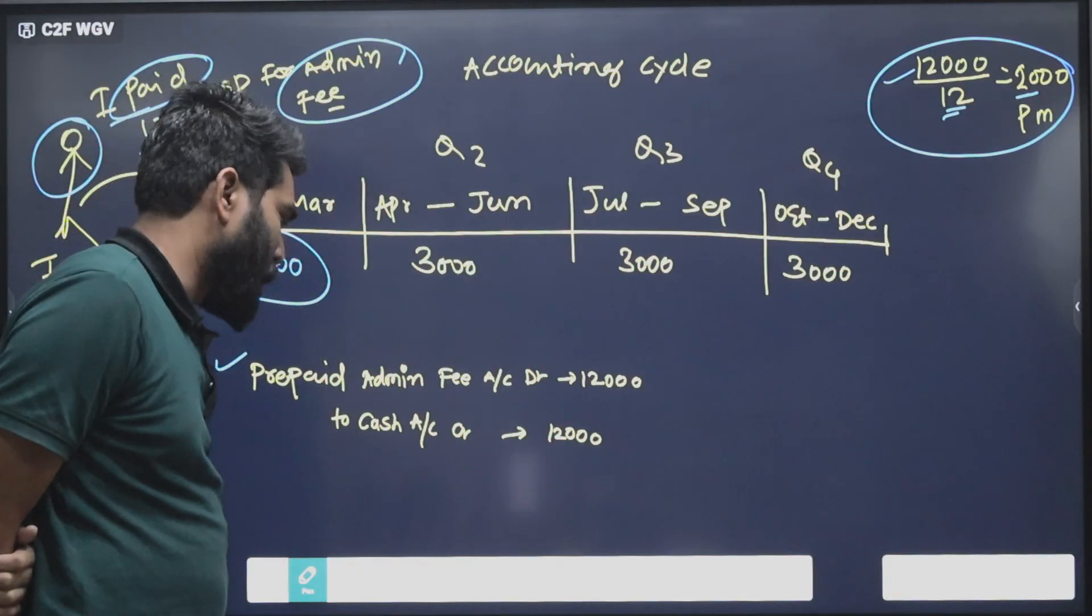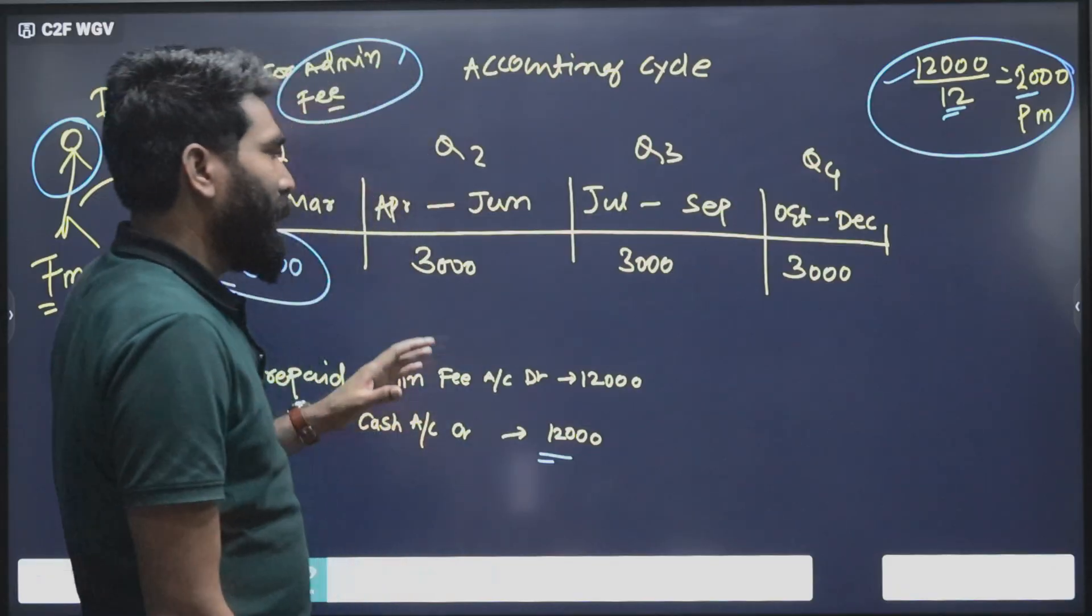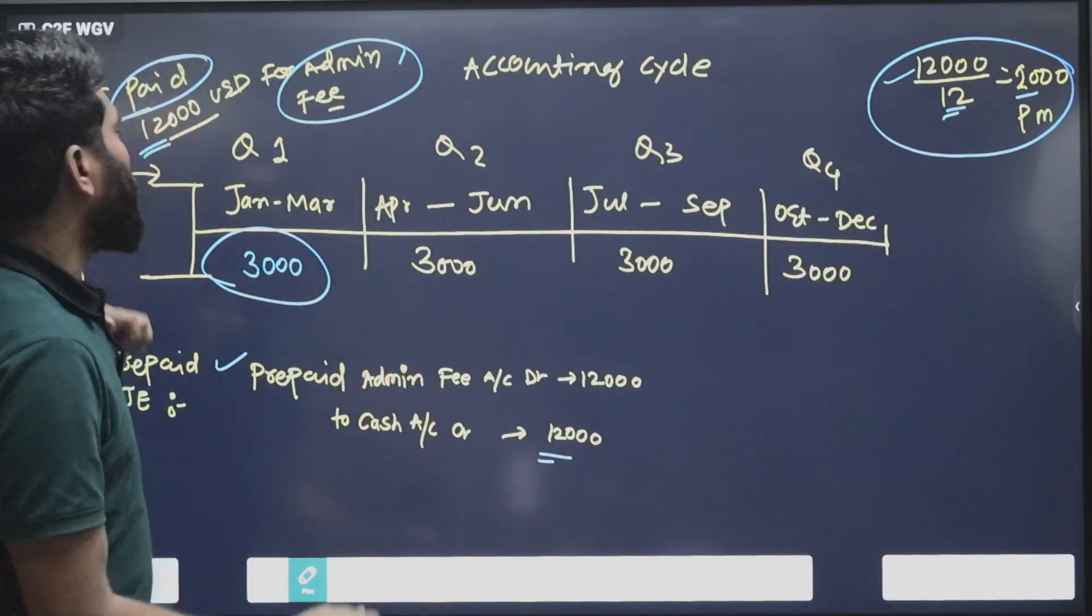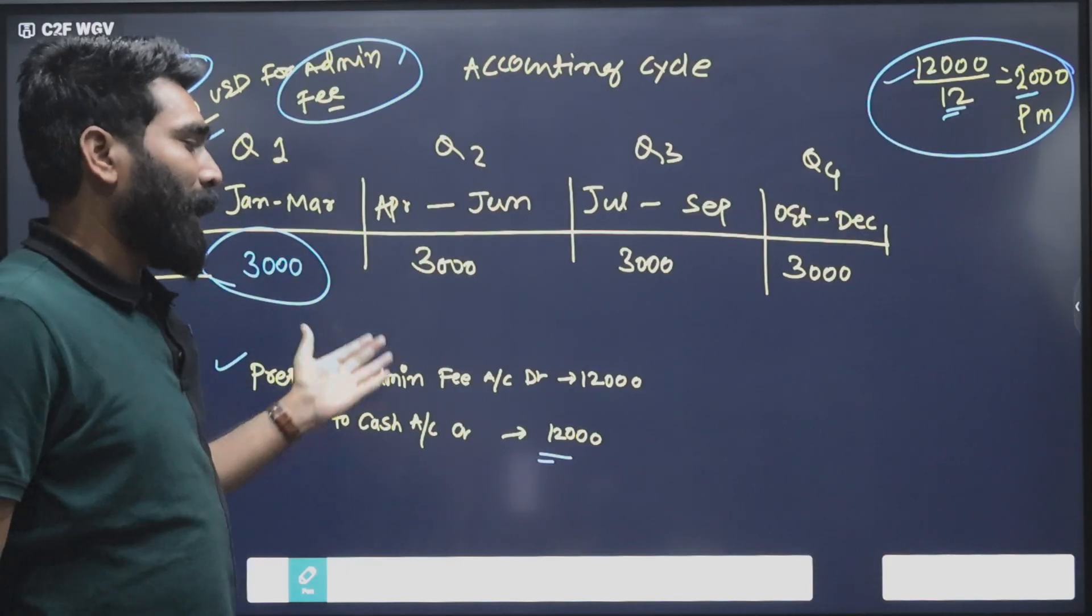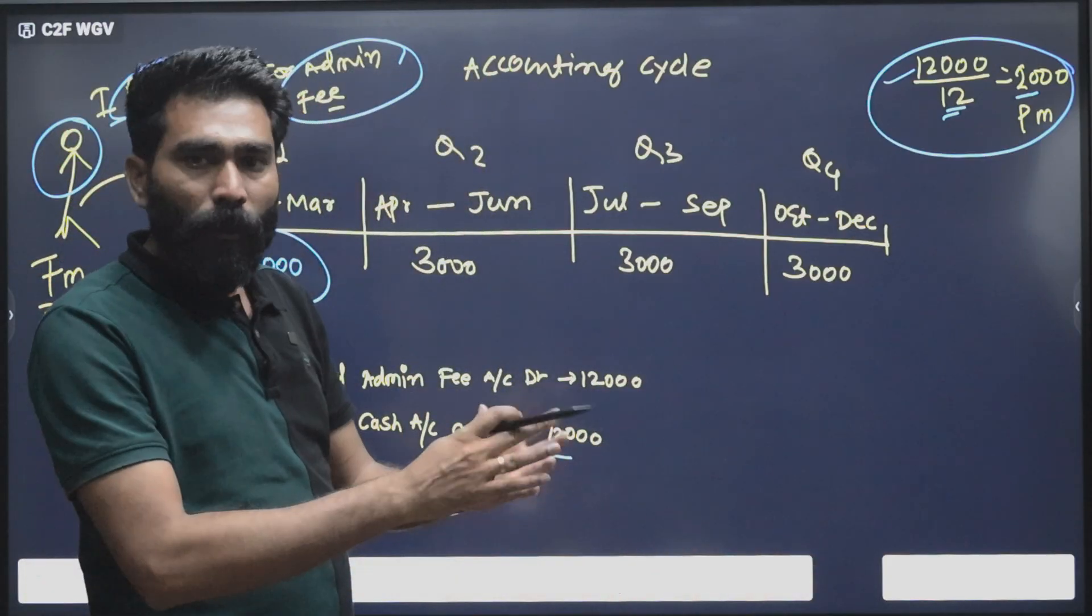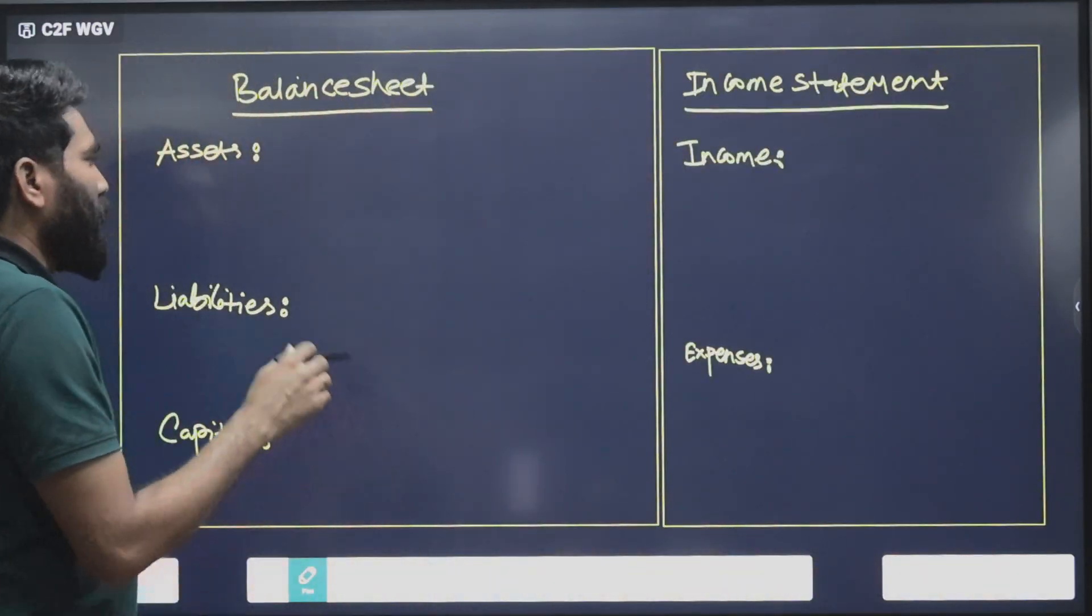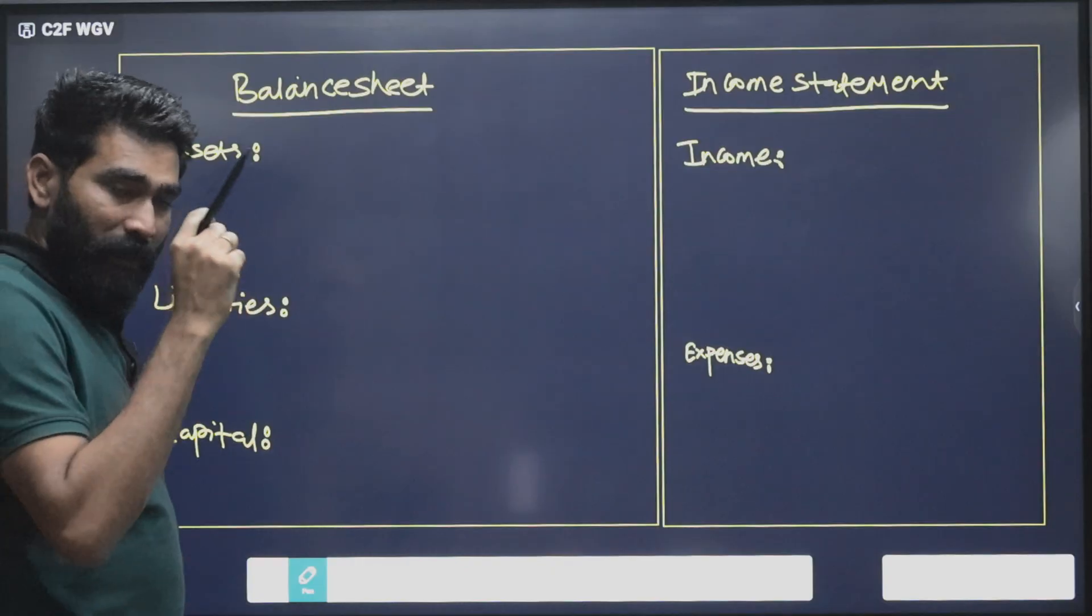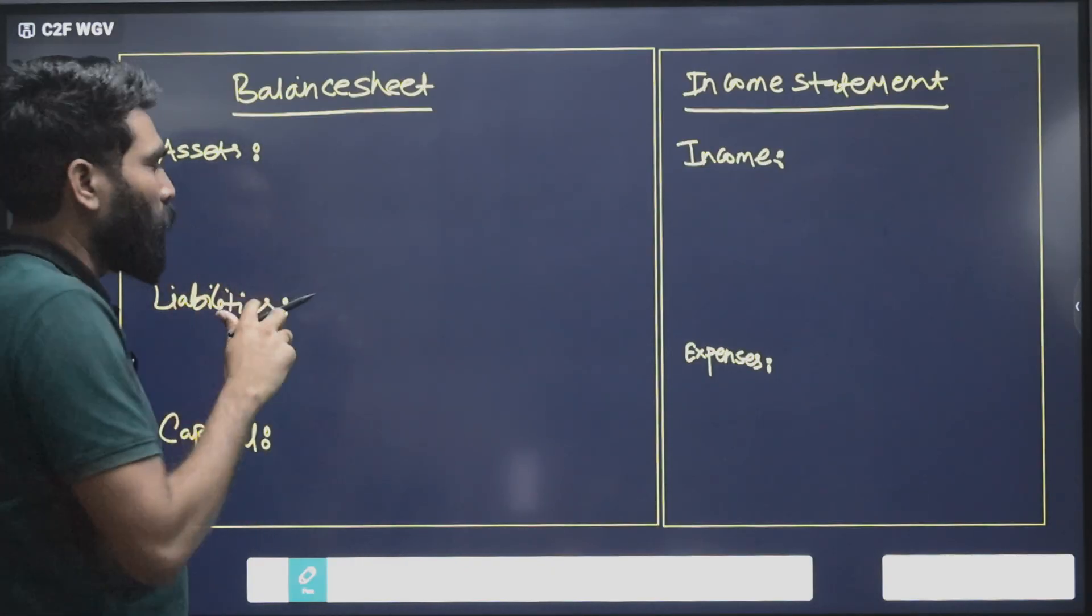Your accounting entry, the journal entry I'm talking about, would be: Prepaid Admin Fee account debit to Cash account credit, because you need to first update the journal entry for this $12,000 paid amount and its impact on the financial statement.